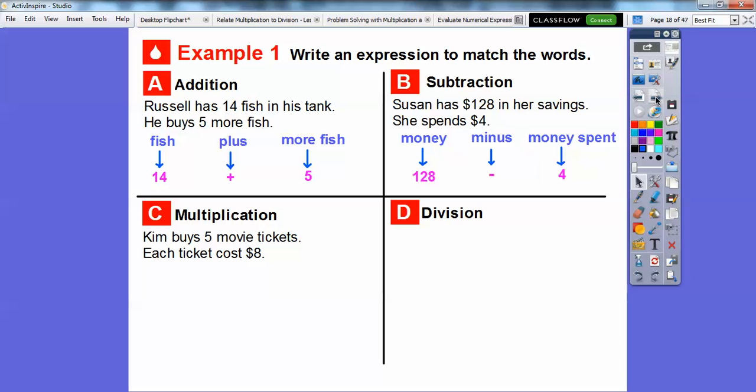All right, so here's one for multiplication. Kim buys 5 movie tickets. Each one costs $8, so it's going to be the tickets multiplied by the cost. So she has 5 tickets, and she's multiplying that by 8. So that would be the expression that represents this scenario right here.